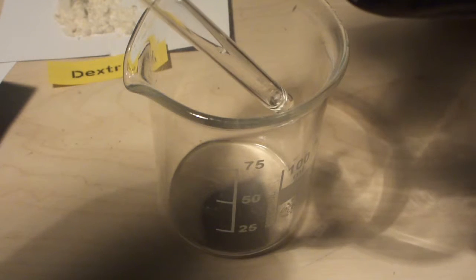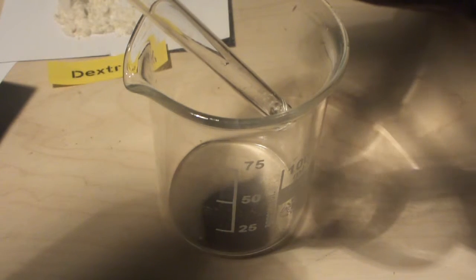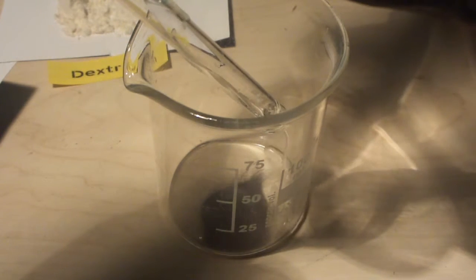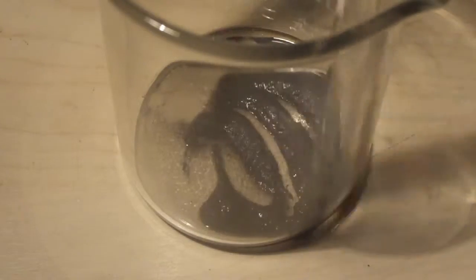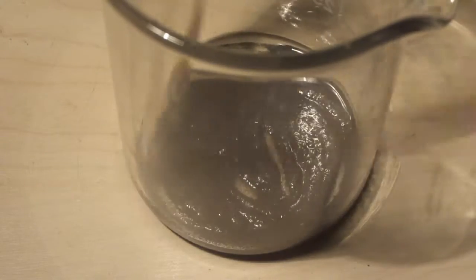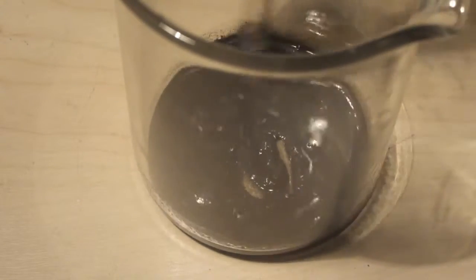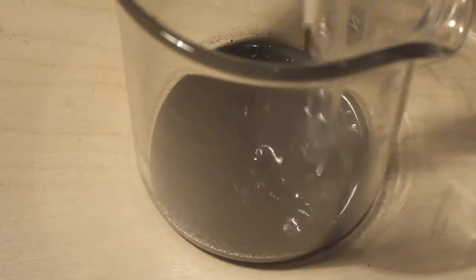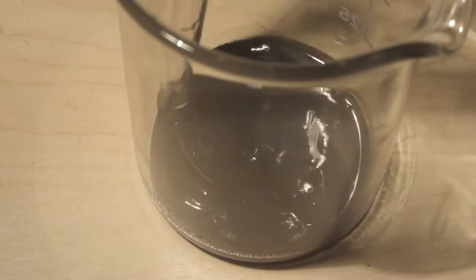This will protect the grains of metal from corrosion and local cell formation. The finer your metal powder, the more important this step will be. That's how the metal powders look like after drying.